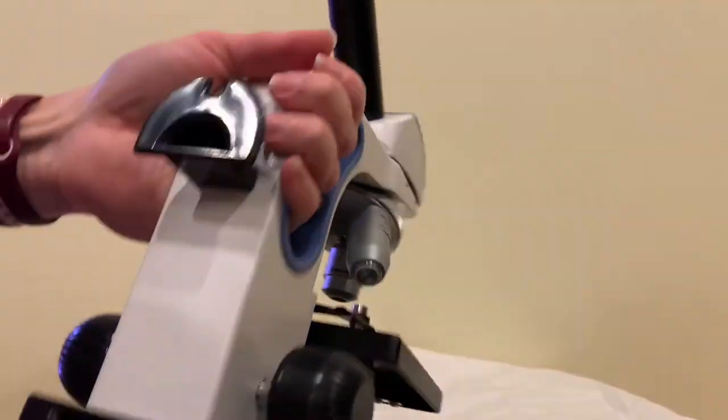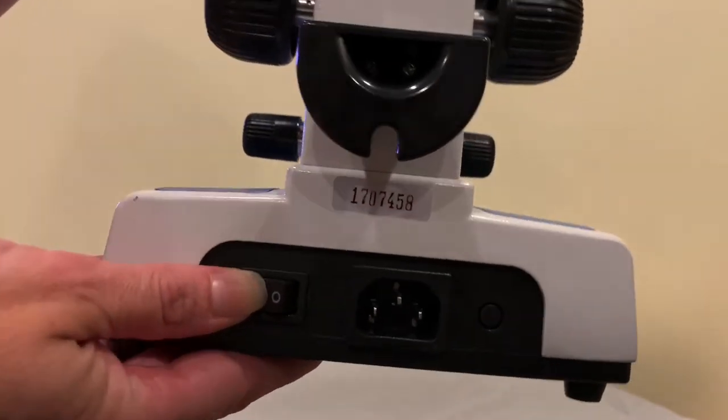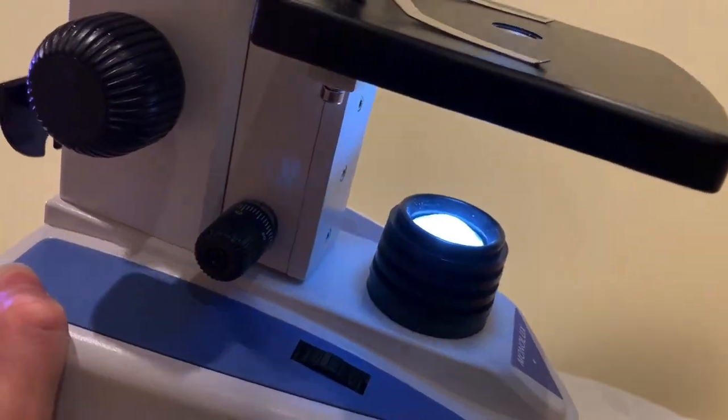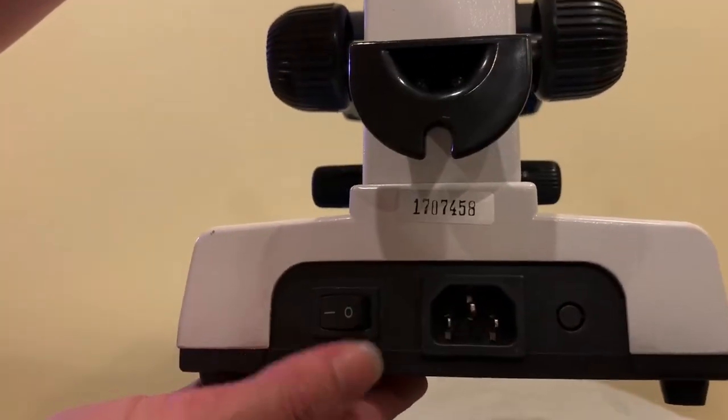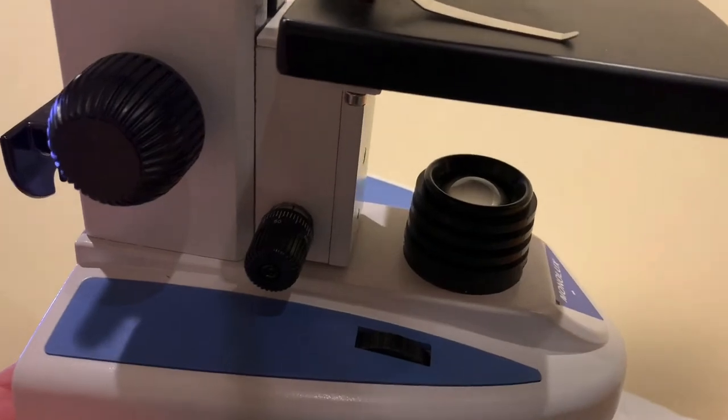Next we have the on and off switch. Turn the microscope on. You turn the microscope on, this light turns on here. And when we turn the microscope off the light turns off. Fancy that.